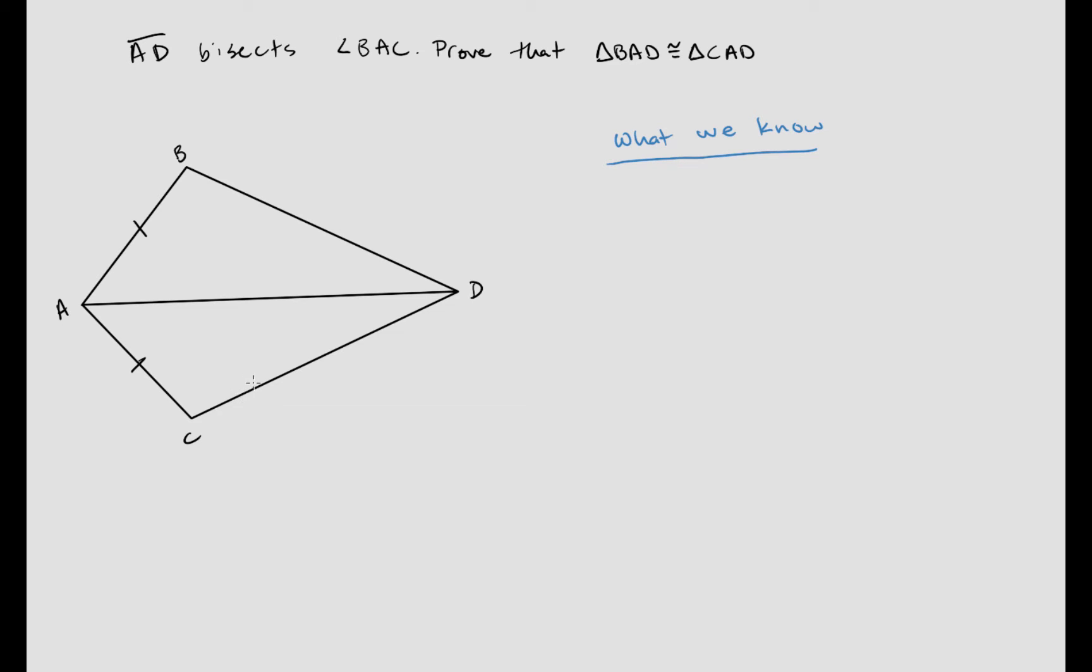Alright, so let's start with what we know. First off, they gave us here that AB and AC are congruent, and that was just given, and they also told us that AD bisects angle BAC. Cool, so those are the things that we know.